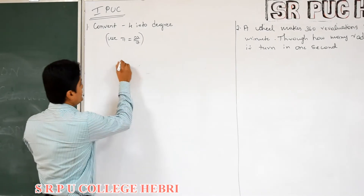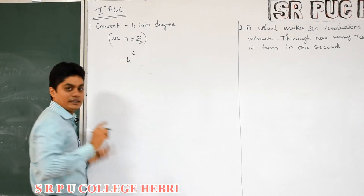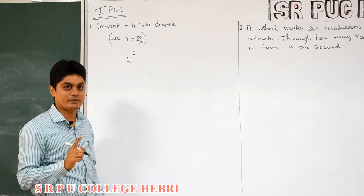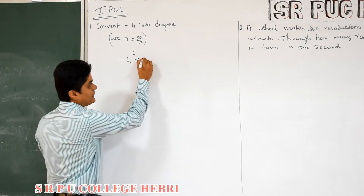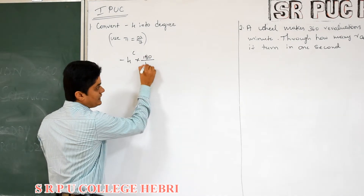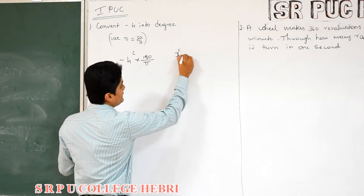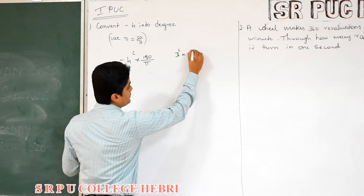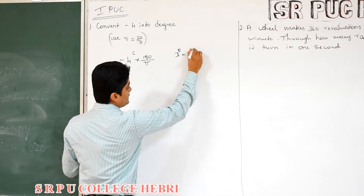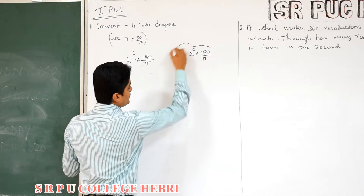Observe this carefully. What is the question? Minus 4 radian. This we have to convert into degree. How to convert this into degree? Do you remember? Multiply by 180 by pi. So, x radian will convert into degree when you multiply x by 180 by pi. I hope you remember this.